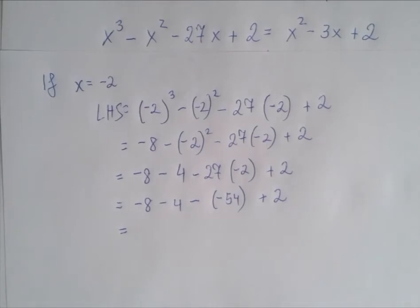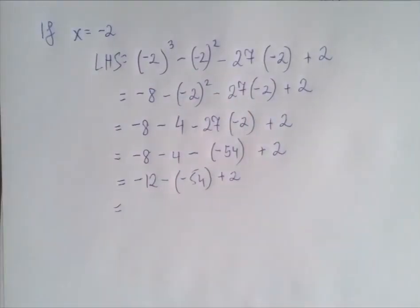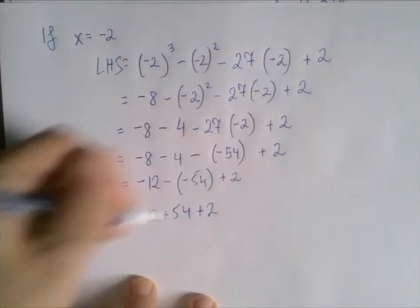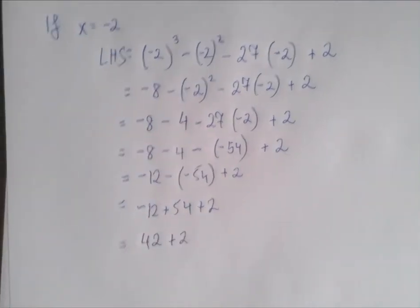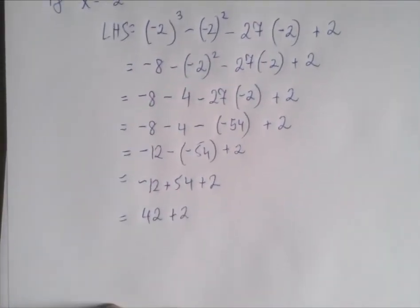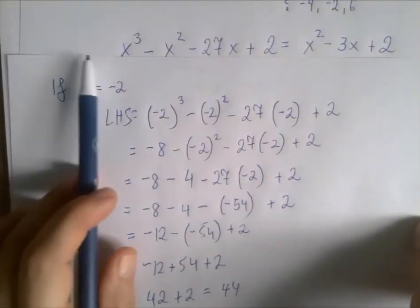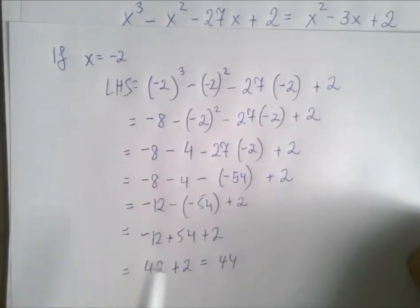And now we're left with only addition and subtraction. We're going to go left to right. Negative 8 minus 4 is negative 12. To subtract is to add the opposite. So negative 12 minus negative 54 is the same as negative 12 plus 54, that is 42. And 42 plus 2 is 44. So if x equals negative 2, the left-hand side of this equation has the value of 44.